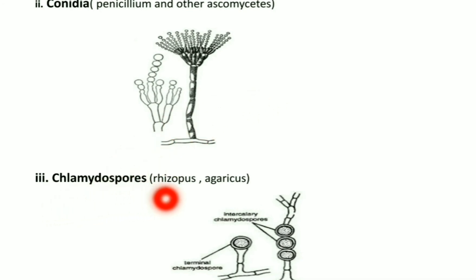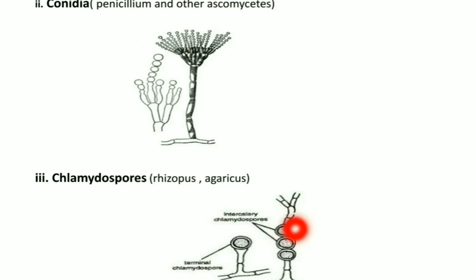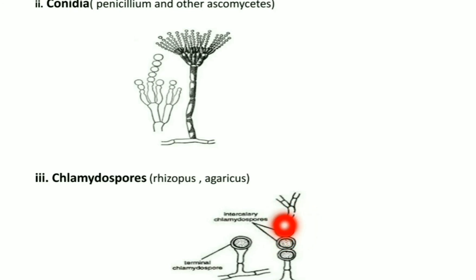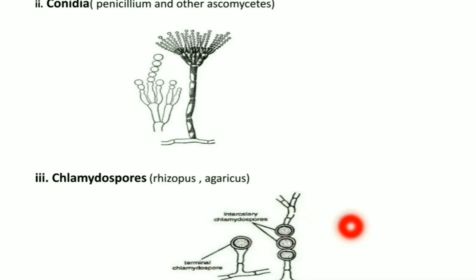Chlamydospores are thick-walled spores which can withstand unfavorable conditions. These are seen in Rhizopus or Agaricus.